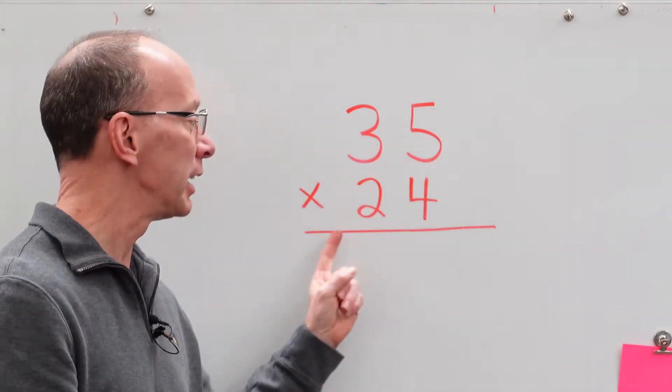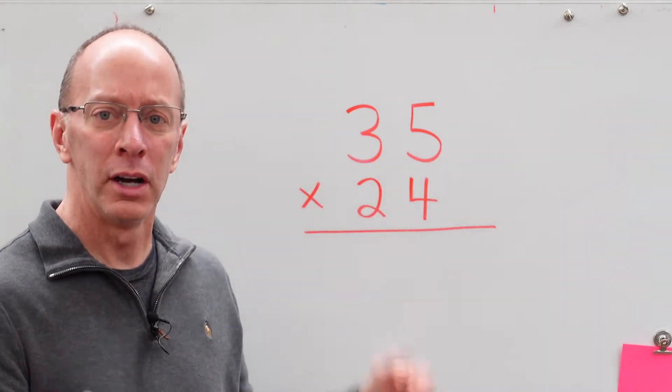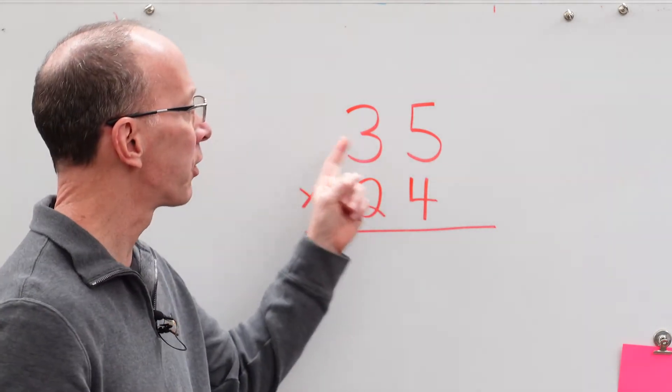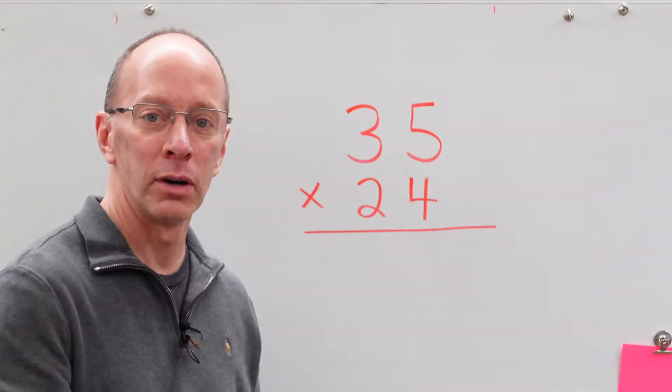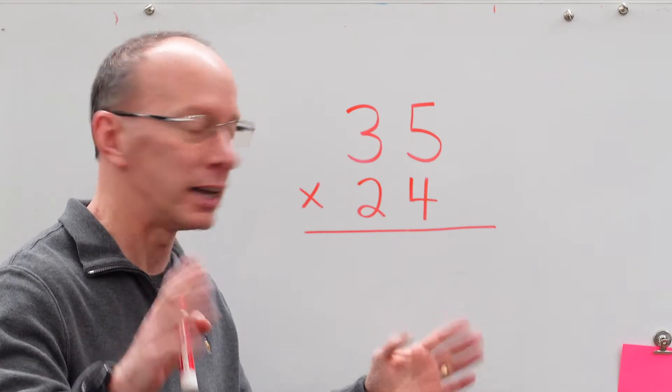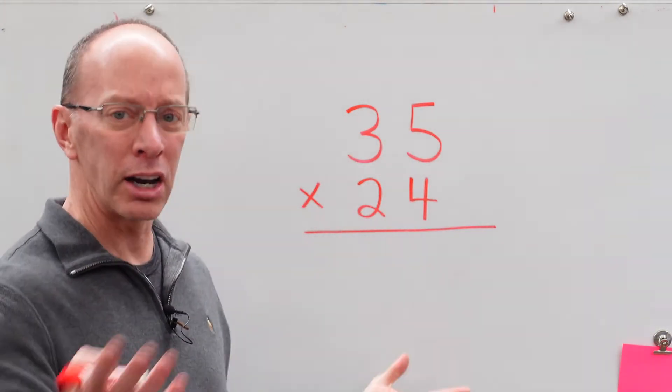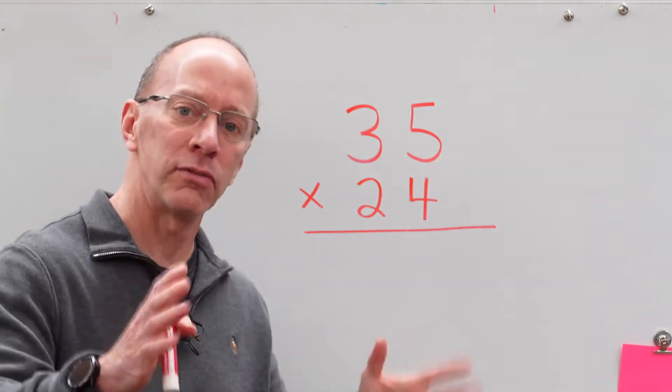We have 35 times 24. So when we see all those numbers, what do we do? We might be used to taking 35 times 4 from previous problems. And if you don't know how to do that, check out my other videos. But now we have another two-digit number here. How do we start this? Well, let's start from what we know.